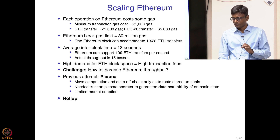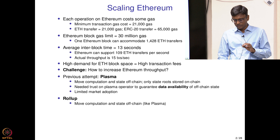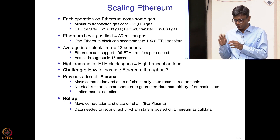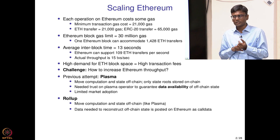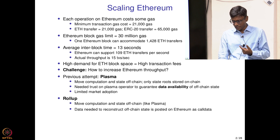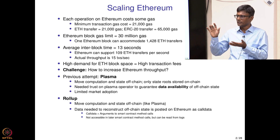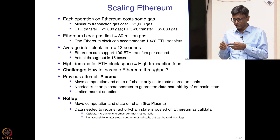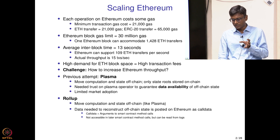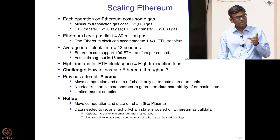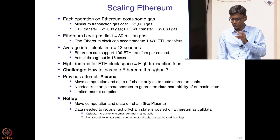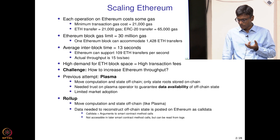What did take off is something called a rollup. The idea of a rollup is the same as plasma: move computation and state off-chain. But the data in the rollup blockchain — the second blockchain — will be posted on Ethereum as something called call data. Call data is the arguments to smart contract method calls, accessible in the current method call but not later. However, it can be read from the Ethereum logs. Call data is cheaper, enabling reduced cost for storing state data on the Ethereum blockchain.